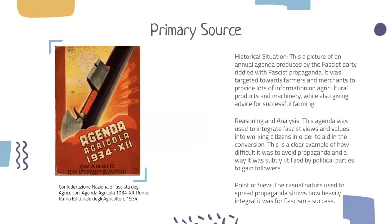Our third primary source is a fascist propaganda journal. Historical situation: this is a picture of an annual agenda produced by the fascist party with fascist propaganda. It was targeted toward farmers to provide information on agricultural products and machinery, while also giving advice for successful farming. Reasoning and analysis: this agenda was used to integrate fascist views and values into working citizens in order to aid in conversion. This is a clear example of how difficult it was to avoid propaganda and how subtly it was utilized by political parties to gain followers. Point of view: the casual nature used to spread propaganda shows how heavily integral it was for fascism's success.